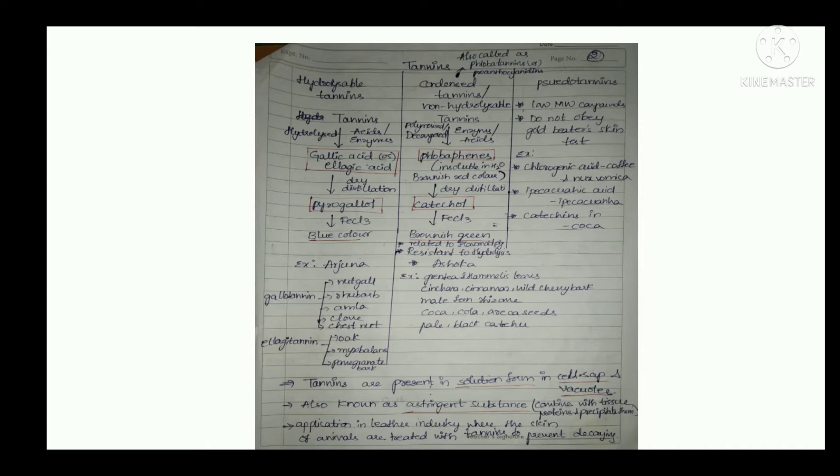Hydrolyzable tannins are tannins which get hydrolyzed by acids or enzymes into gallic acid or ellagic acid. Further, on dry distillation they give pyrogallol, and this pyrogallol when treated with ferric chloride (FeCl3) gives a blue color.